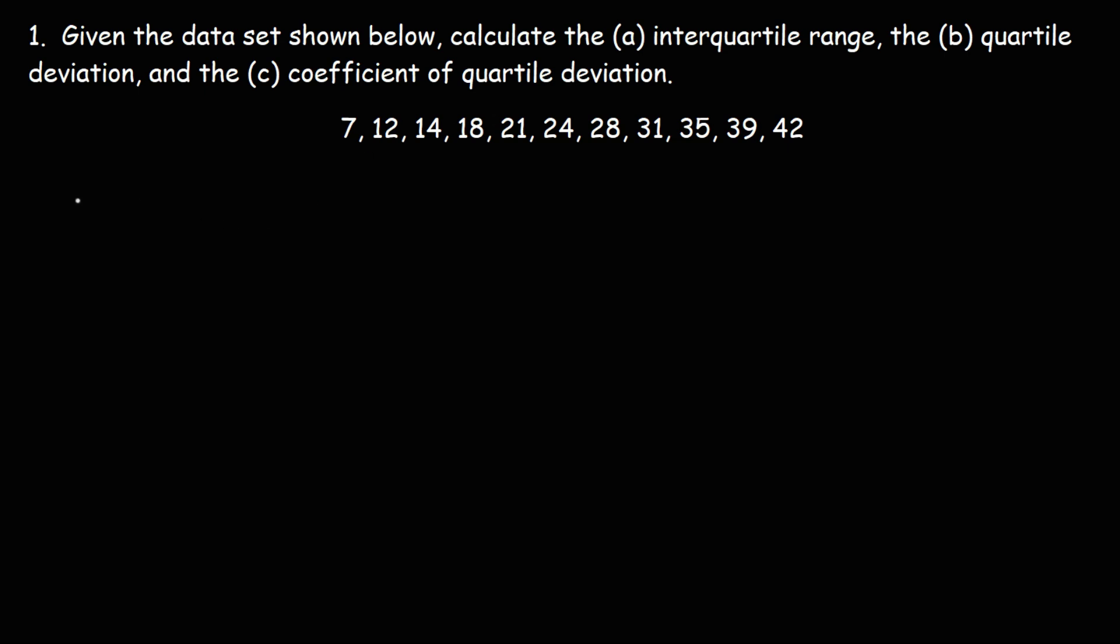So starting with part A, the interquartile range, IQR for short, is basically the third quartile minus the first quartile. Well, we need to find the first and the third quartile. And there's a formula that we could use to find that.